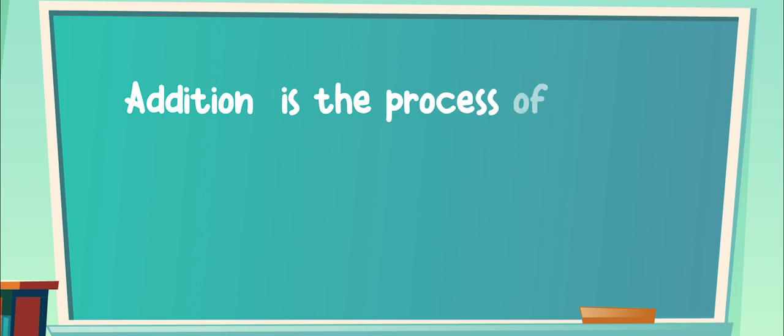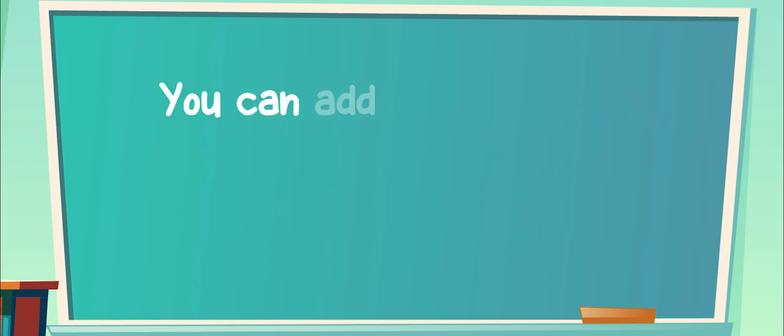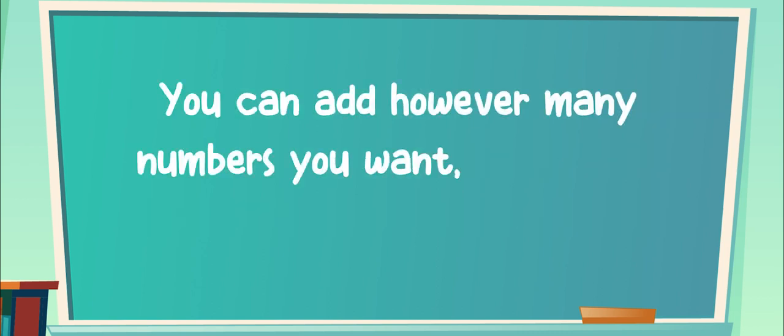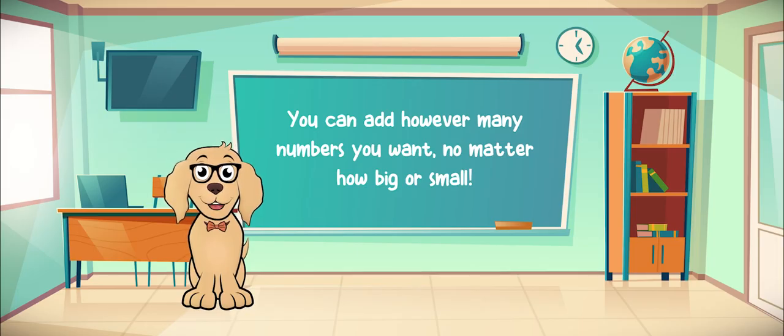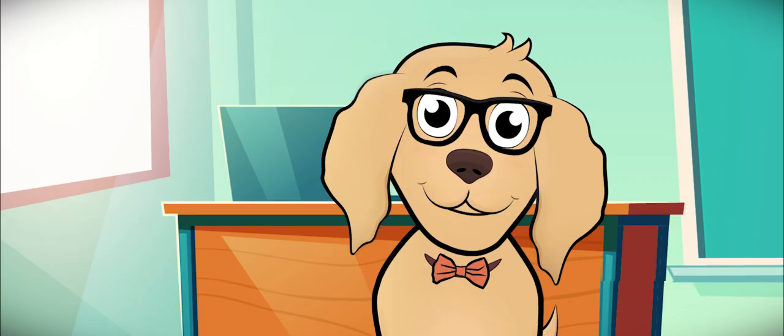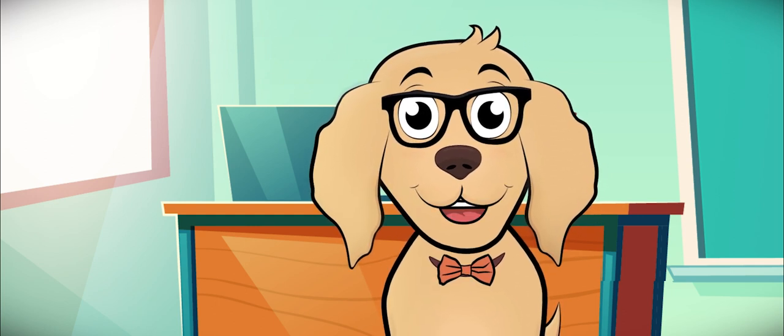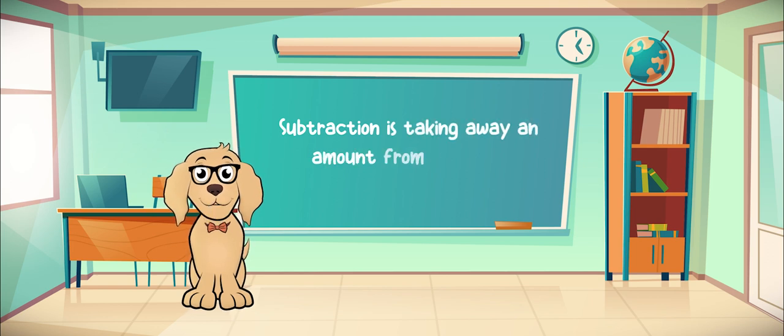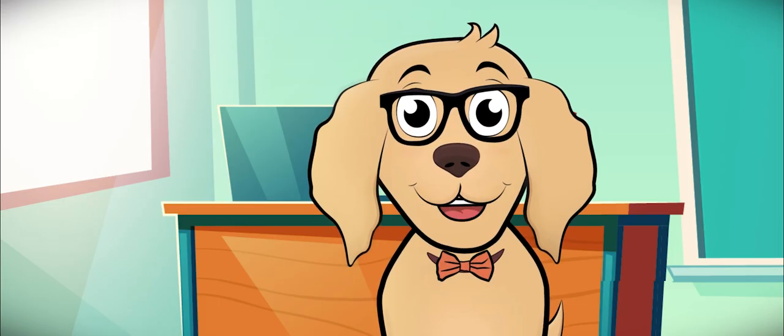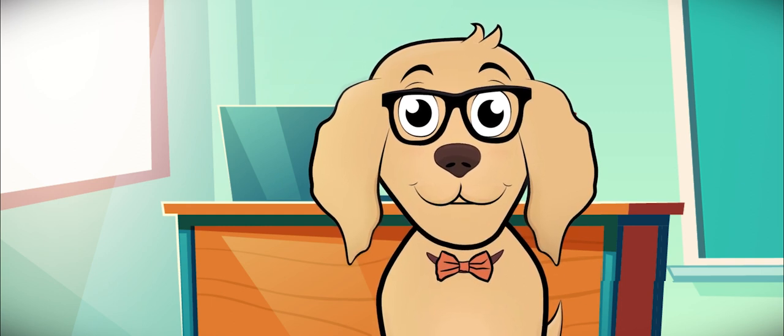Addition is the process of finding a total for a collection of items when they are all put together. You can add however many numbers you want, no matter how big or small, and always come up with a total or sum. It is also important to know the opposite of addition, which is subtraction. Subtraction is taking away an amount from a total. Let's go over an example of addition and subtraction so you can see what I mean.